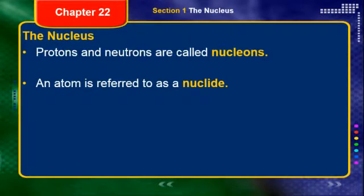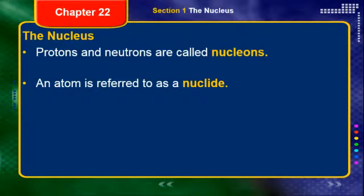An atom is referred to as a nuclide. The reason we have a specific term for this within nuclear chemistry is because we're dealing with atoms as though they're like individual people with an individual identity. We have this idea of the isotope, so we're going to take into account the mass number. We're dealing with this atom as though it is a person with its own chemical characteristics. So we have this term nuclide.